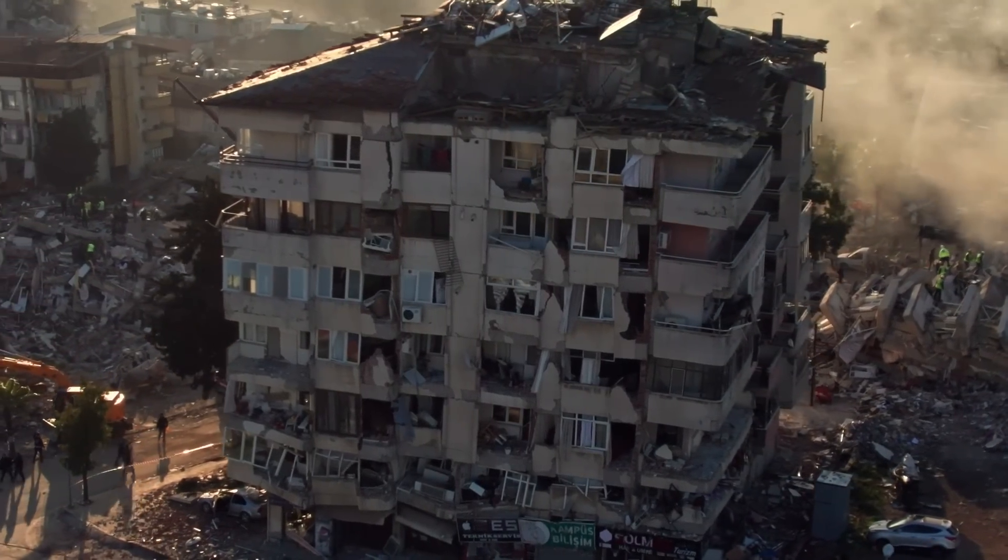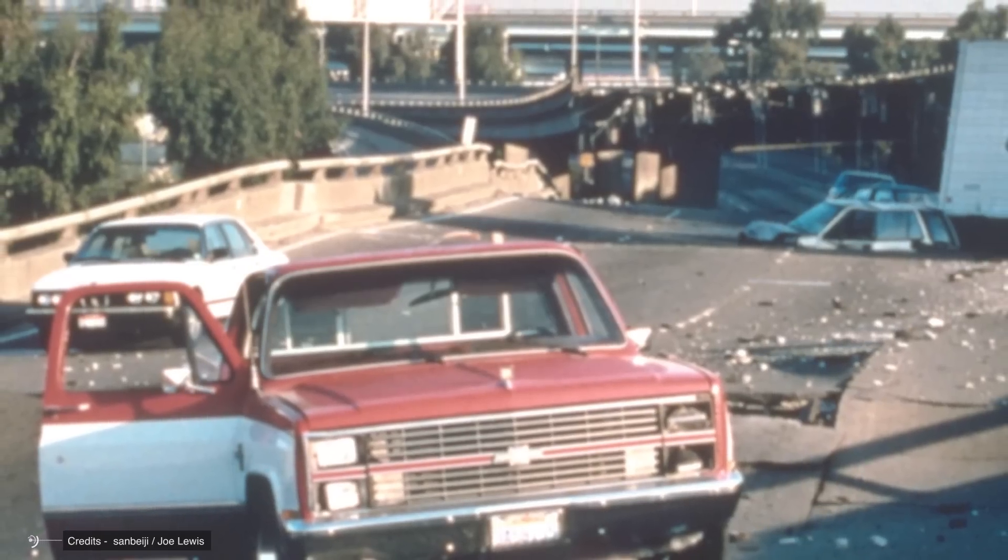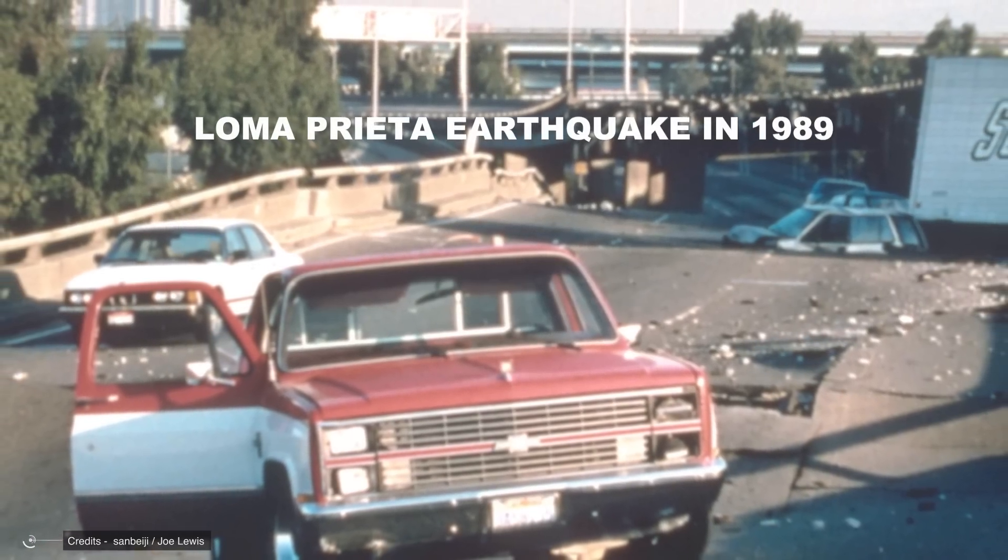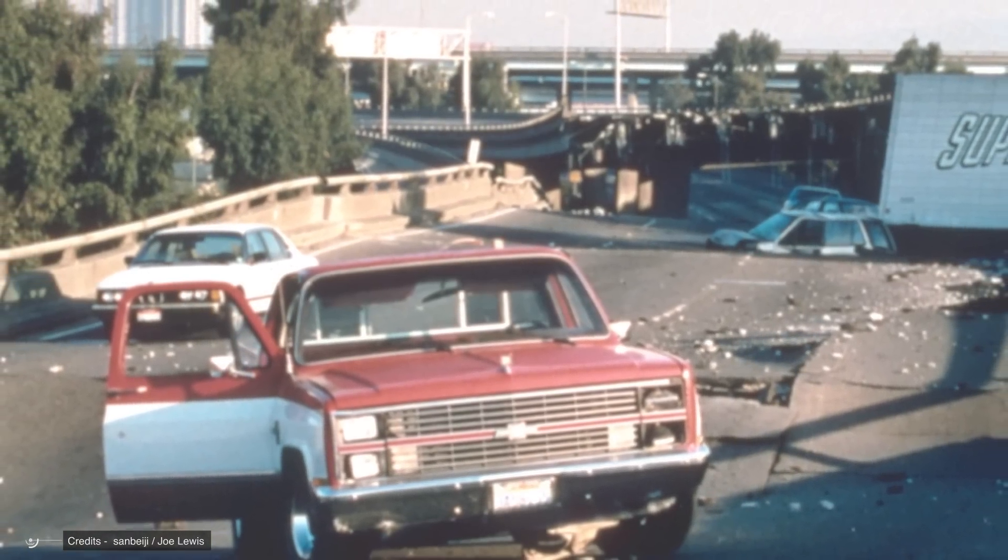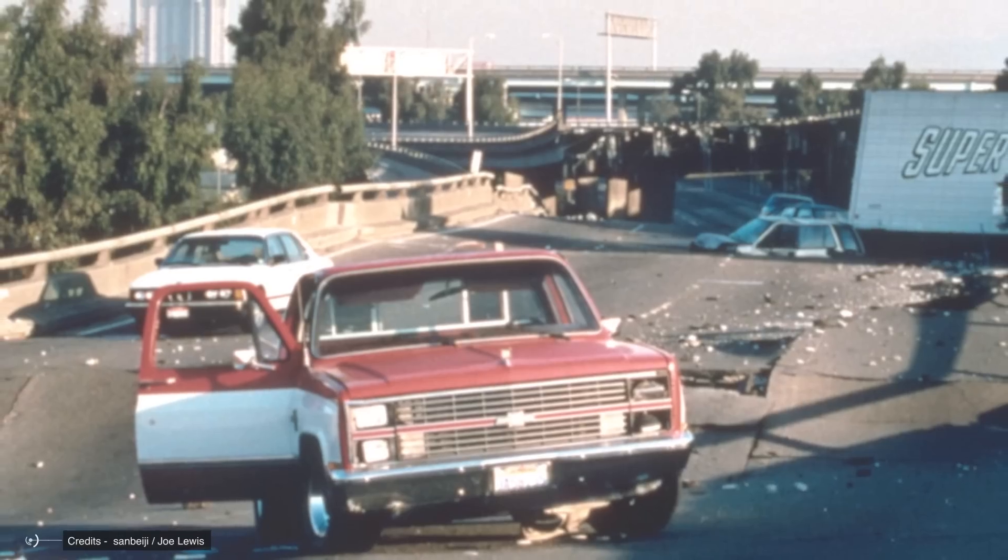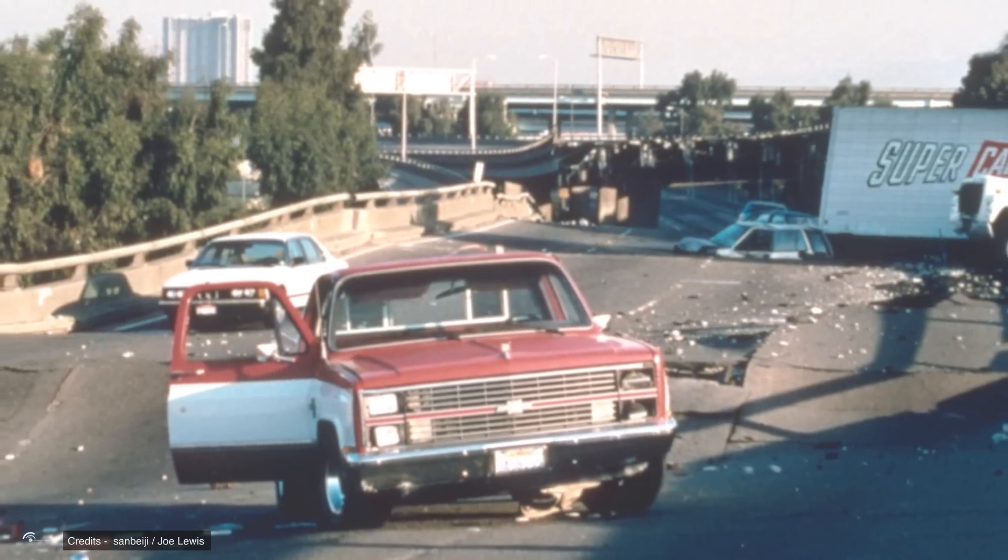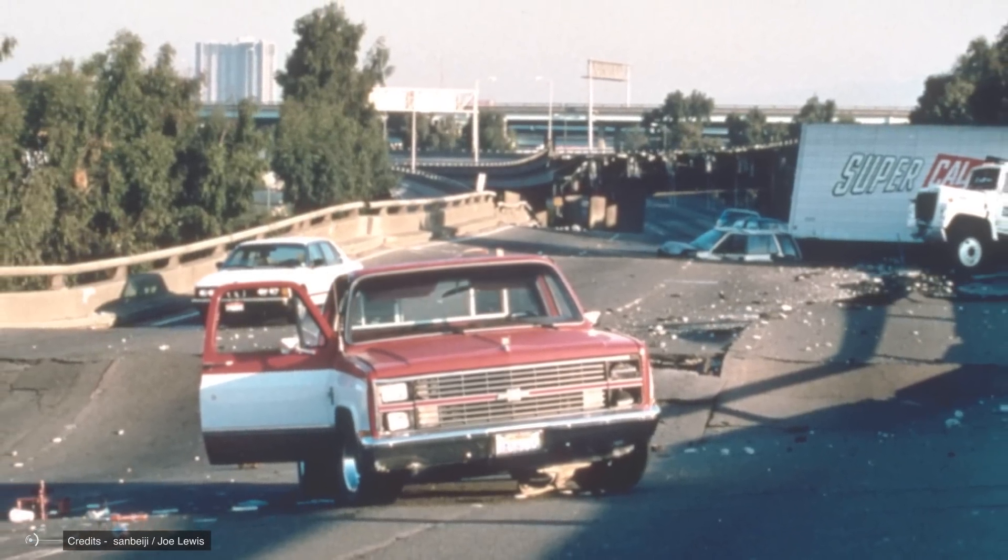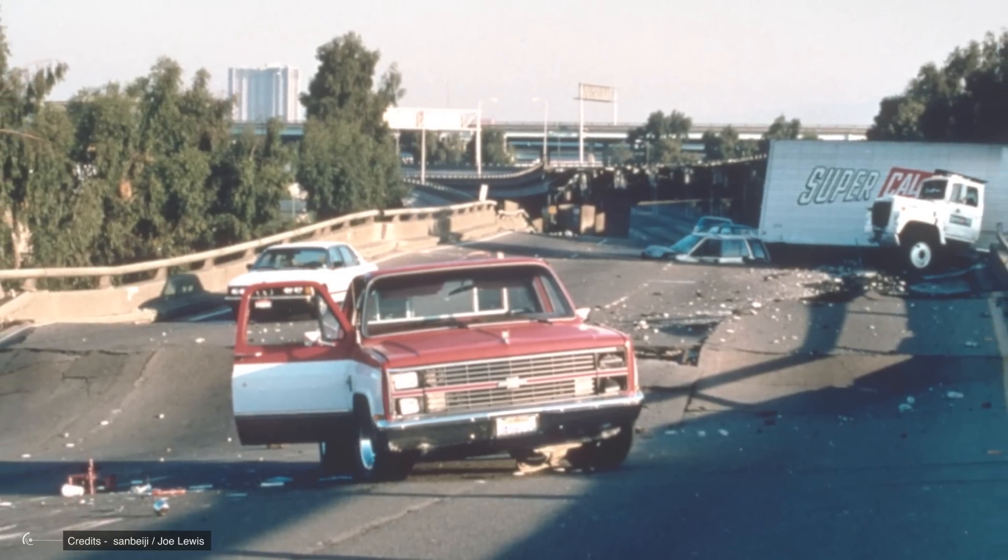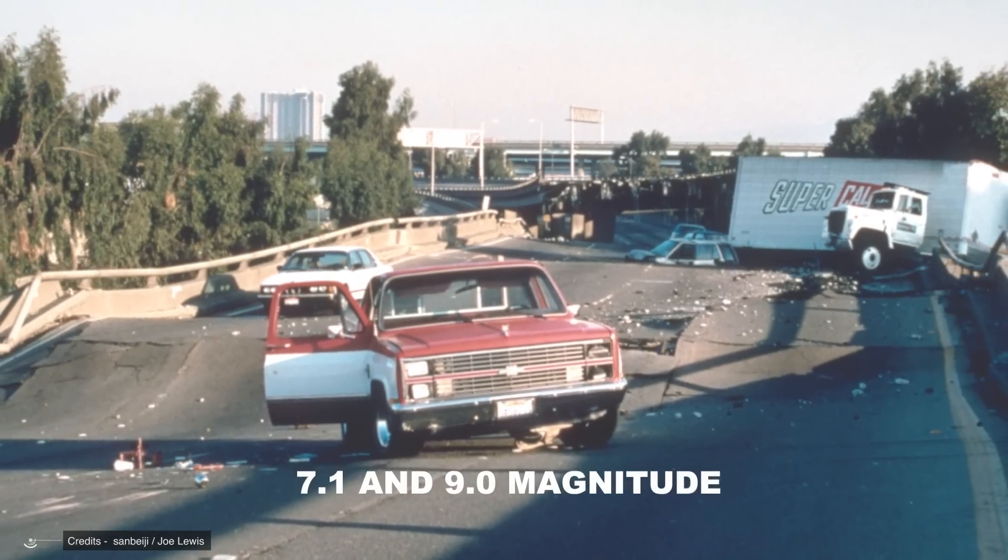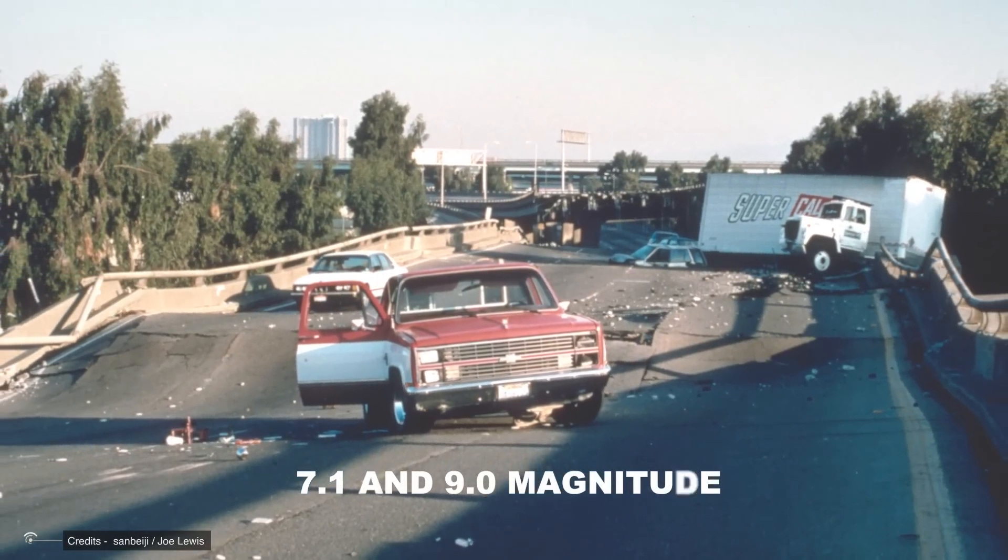But we can't rely on coincidence. To put it in perspective, the Loma Prieta earthquake in 1989 had a magnitude of 6.9, and the latest estimate of the impending Cascadia megaquake using our most advanced monitoring technique is between 7.1 and 9.0 magnitude.